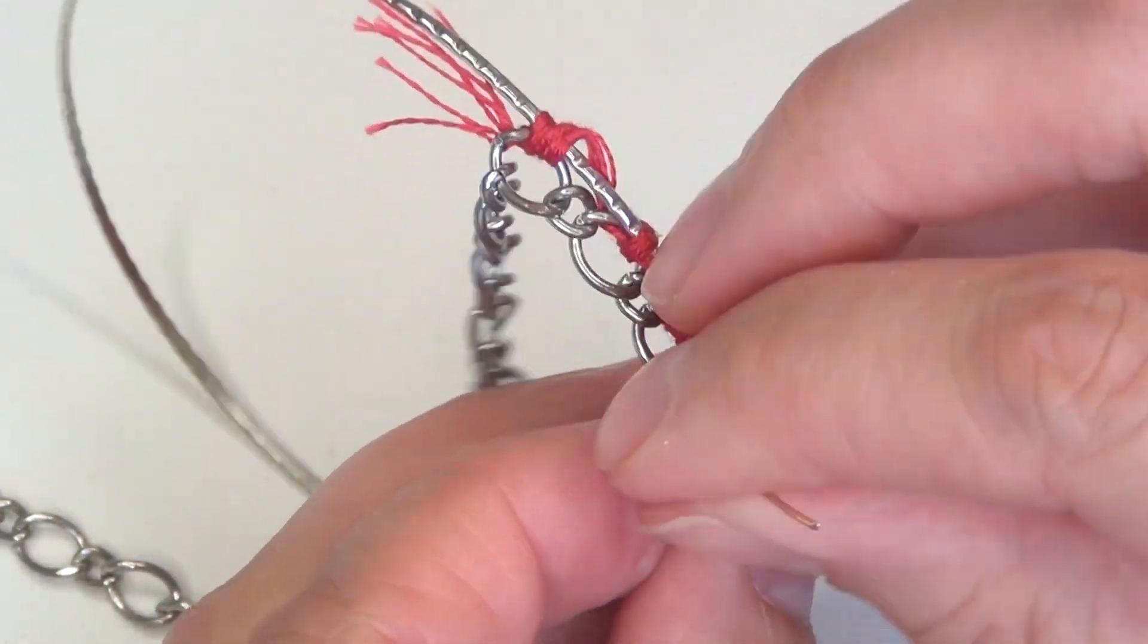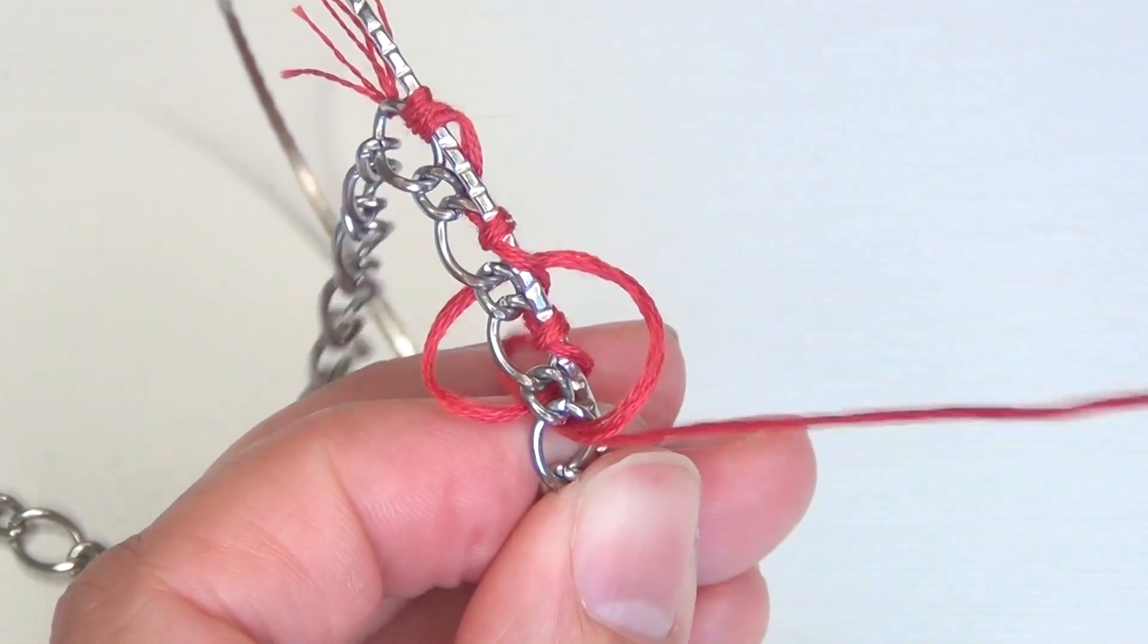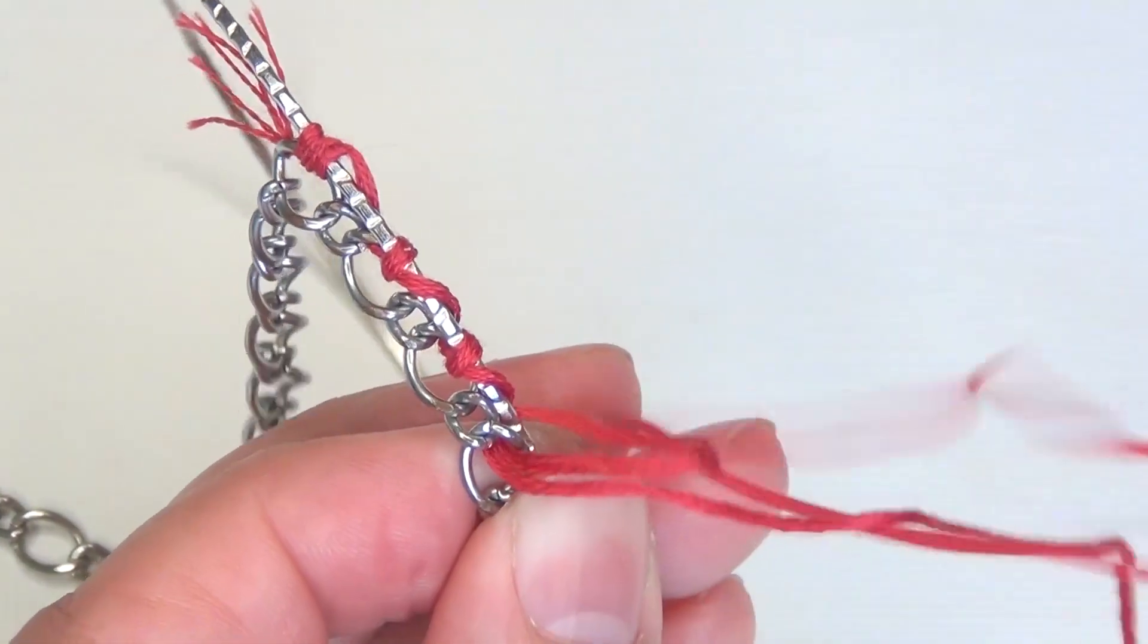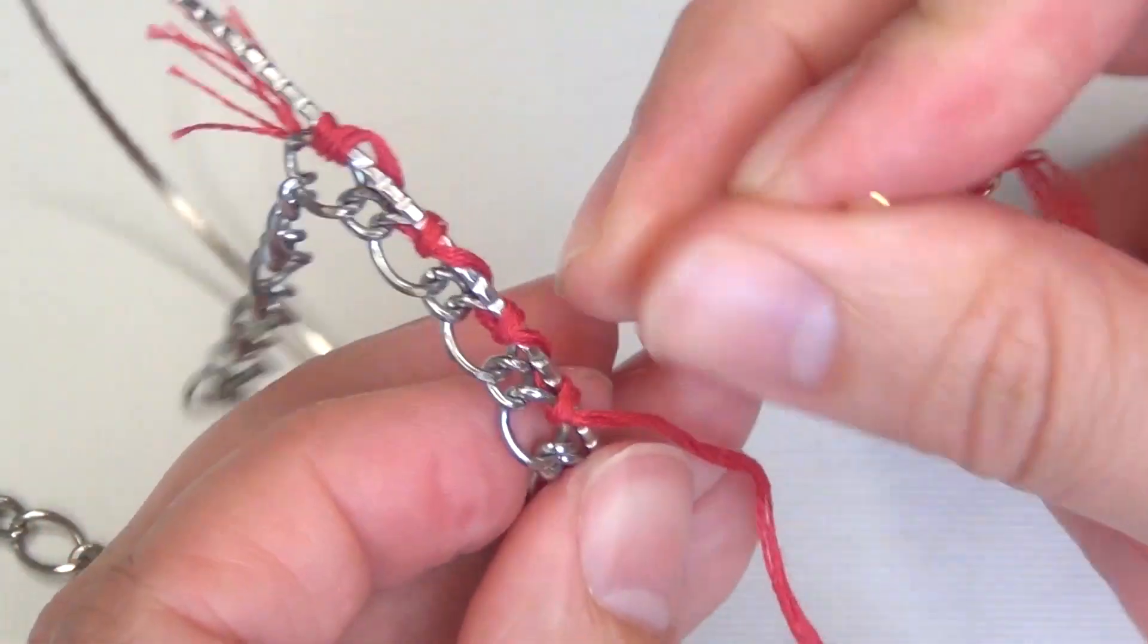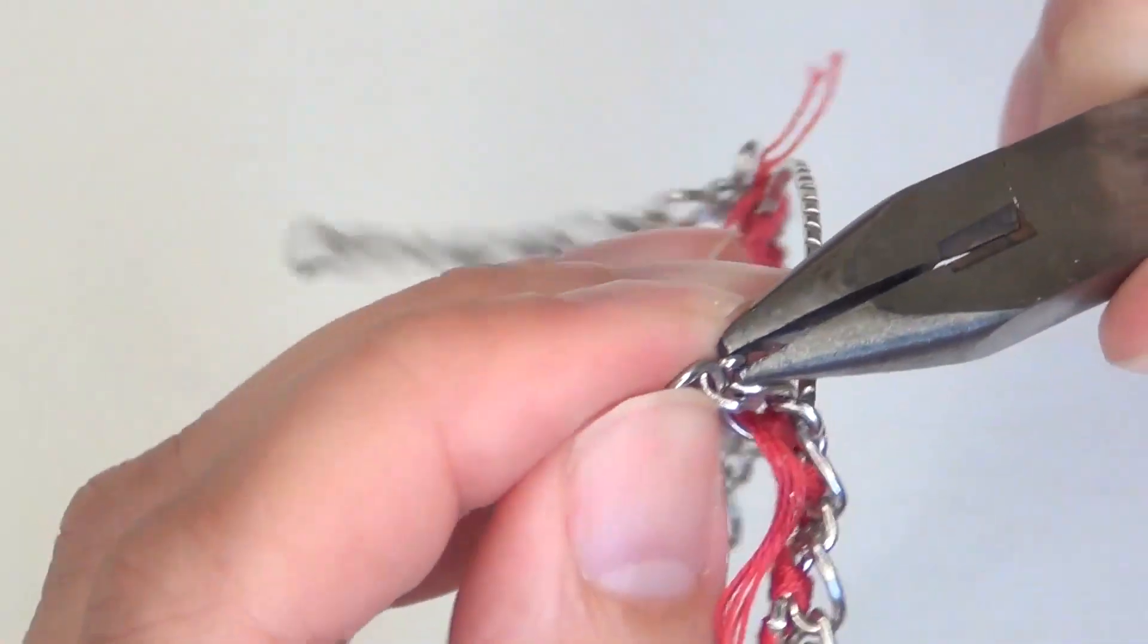Again, you're going to go through the back of the chain link, then around the outside of the bangle, then through that same link again. Before you pull it tight to close up the loop, pass the end of your thread down through the loop, then pull the thread to pull the loop shut. Once you've gone almost all the way around your bracelet...